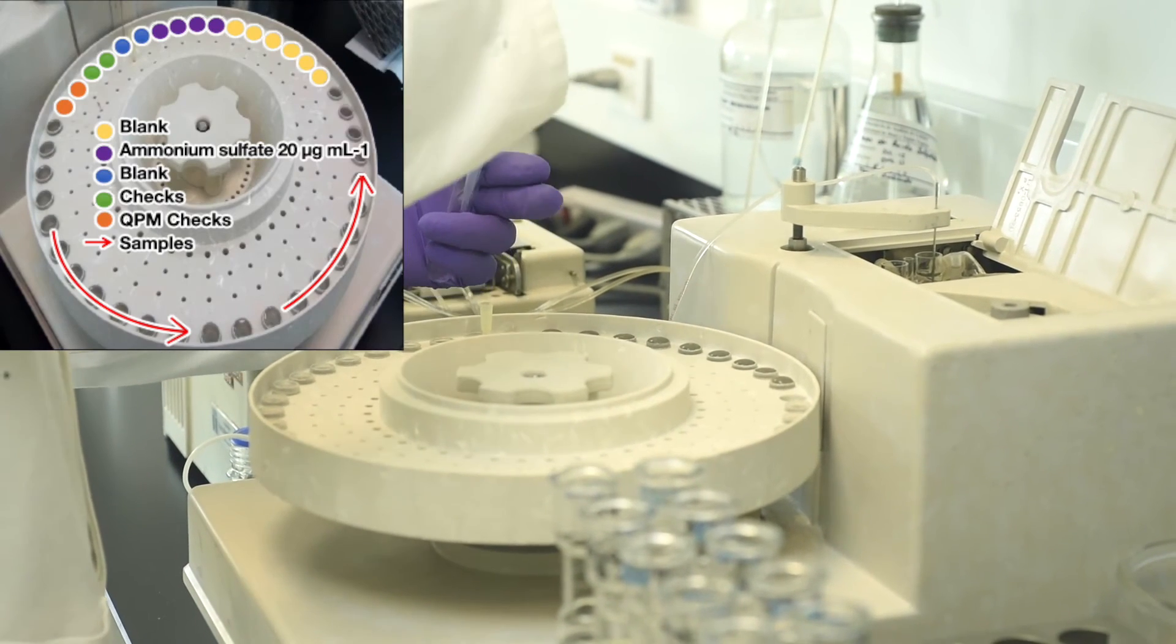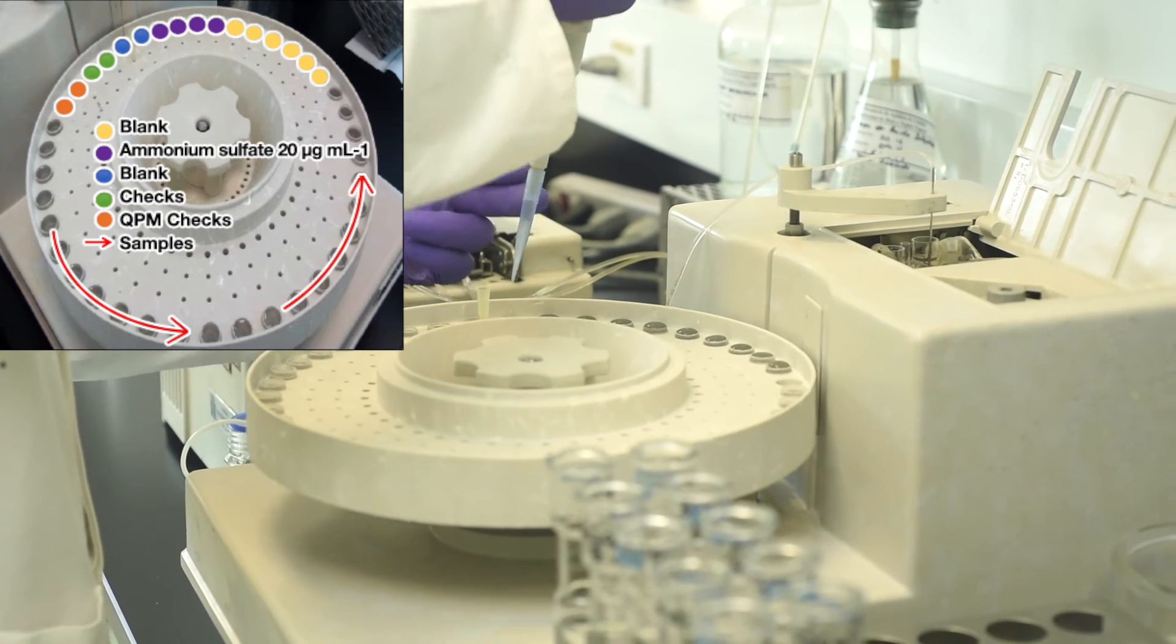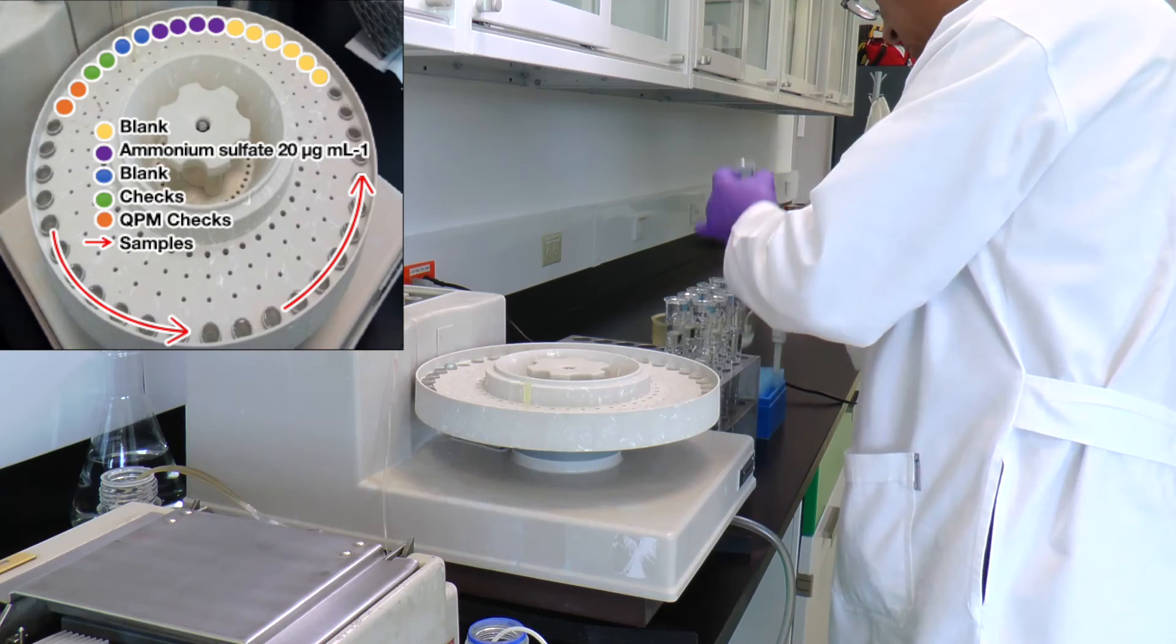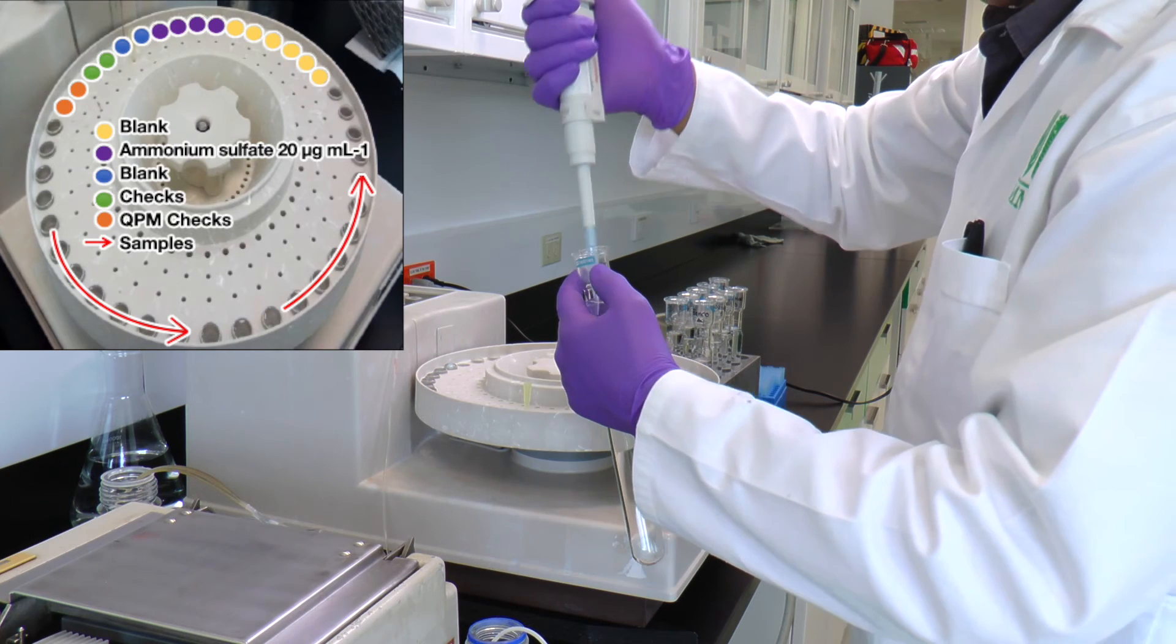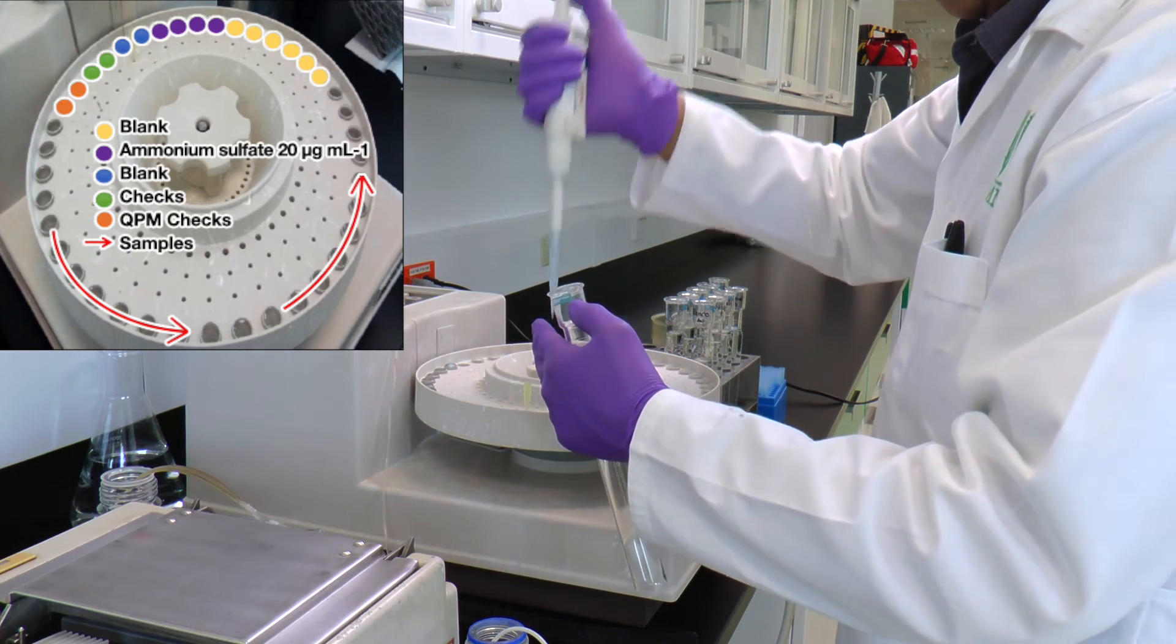6 capsules with the digestion blank to adjust the equipment. 4 capsules with 20 micrograms per ml of the standard mixture of ammonium sulfate to adjust the graph maker.